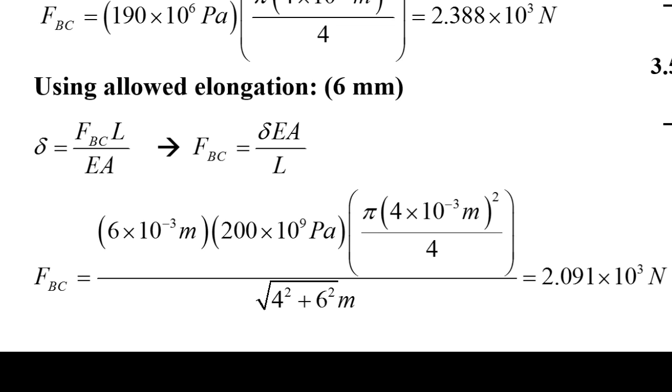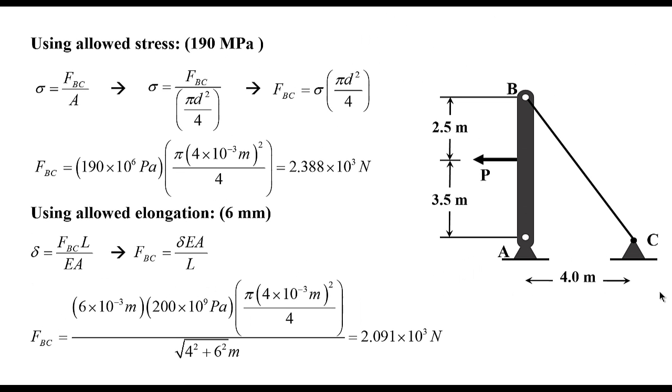Basically I plug everything in and have to be careful about the units. So we have the delta allowed, which is 6 mm, in meters going to be 6 times 10 to the negative 3. 200 times 10 to the 9th Pascals, which is E, and again the diameter is 4 times 10 to the negative 3 meters squared multiplied by pi divided by 4, which should give me the area, and the length of the cable, just using Pythagorean theorem.